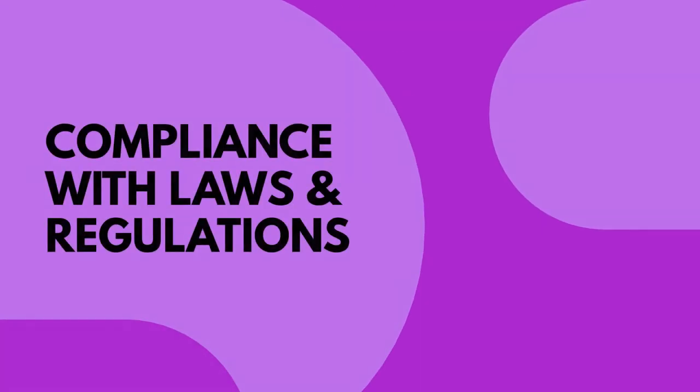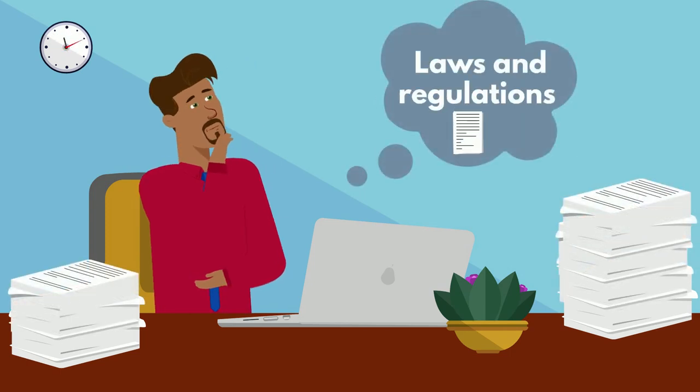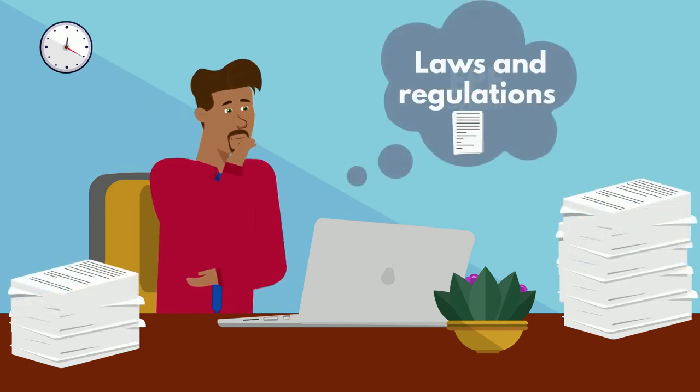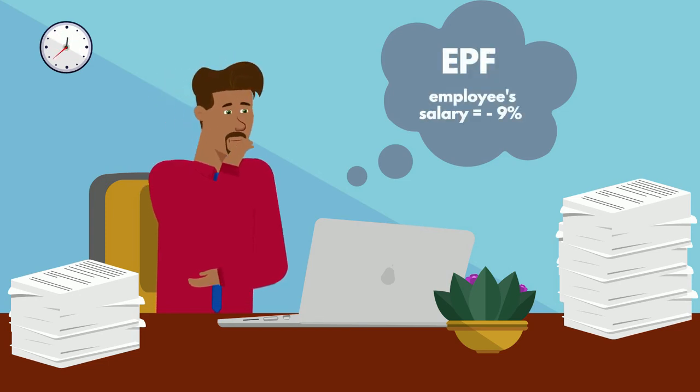Compliance with laws and regulations. The pay system must be in line with the laws and regulations. For example, in Malaysia they are using the EPF system where it is required for the employer to deduct the employee's salary by 9% while the employer pays 10% for future saving.